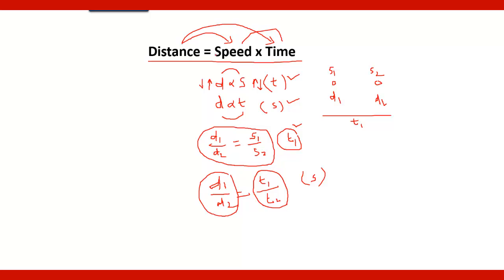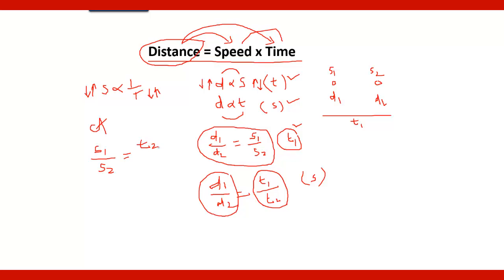But if the distance is constant, then speed and time are inversely proportional. If speed increases, time decreases, and if speed decreases, time increases. In this case, S1 upon S2 is equal to T2 upon T1. Remember these three ratios: two are directly proportional and one is inversely proportional.